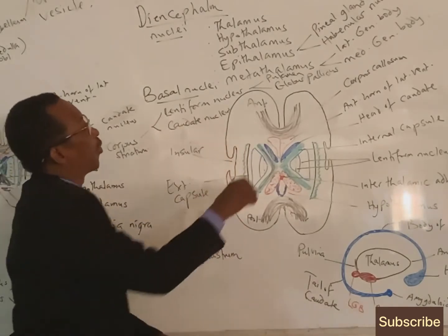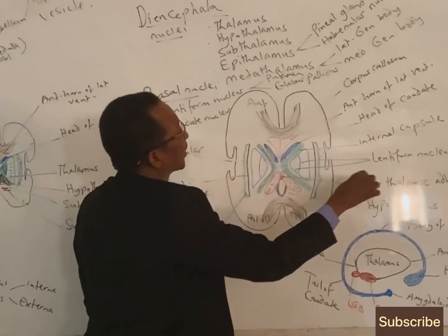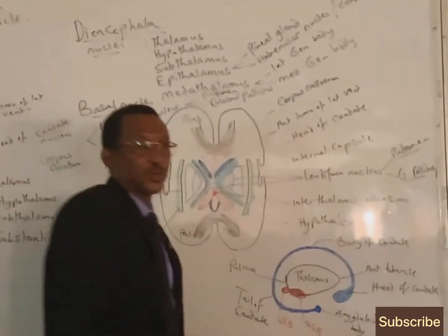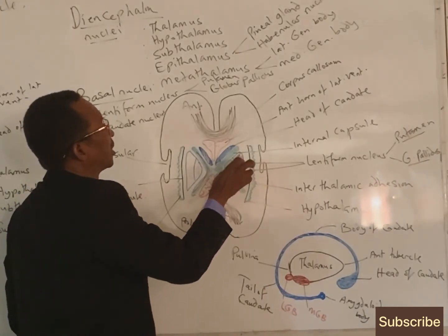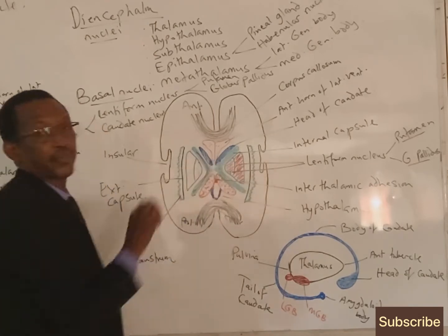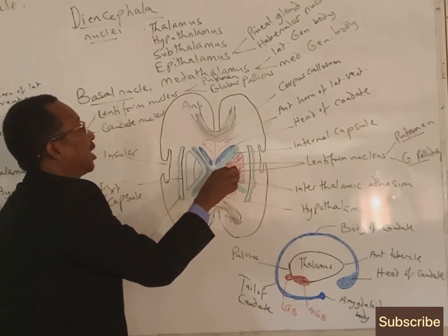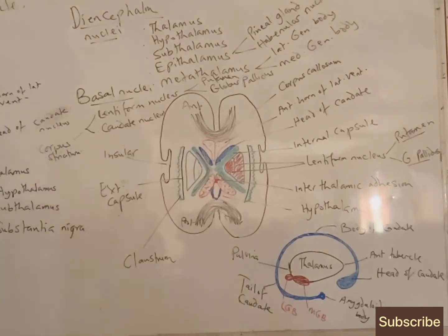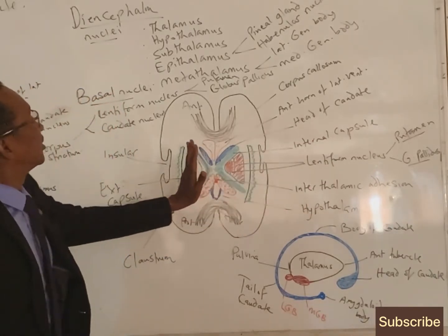Lateral to the internal capsule is the wedge-shaped lentiform nucleus, made up of two groups of nuclei: the putamen, which is the most lateral part of the lentiform nucleus, and the globus pallidus, which is the innermost. The globus pallidus is further subdivided into an internal part — globus pallidus interna — and an external part — globus pallidus externa.